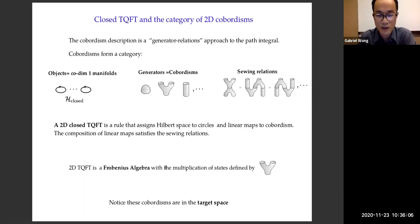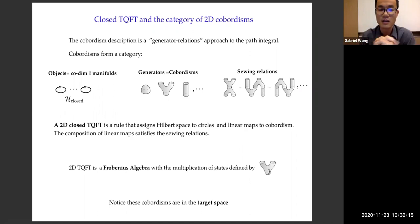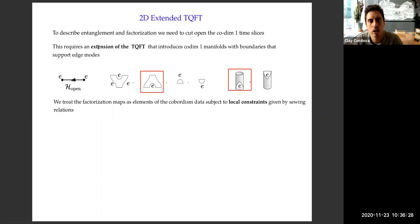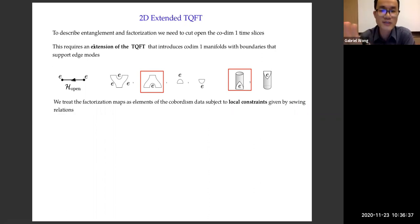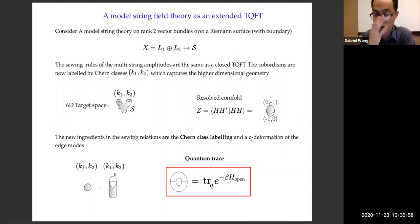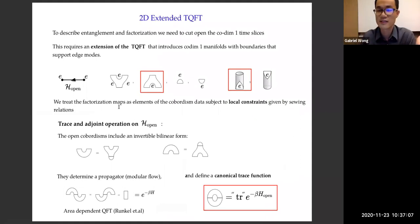To describe entanglement and factorization, we have to cut open those codimension-one slices. The reason we're discussing a 2D TQFT rather than a higher-dimensional one appropriate to the target space is that the beauty of this story is: the A-model on a certain type of fiber bundle — a rank-two vector bundle — is given by such 2D cobordisms, except that I add labels to describe the fiber bundle structure. I end up drawing exactly the same pictures as in two dimensions, but decorating the cobordisms with two numbers — Chern class numbers — that are complete enough to specify the entire 6D geometry we're interested in. This is a very important miracle. Now we cut open the circle and have an interval with endpoints labeled E for the edge mode, and new cobordisms that go between intervals and between circles and intervals.